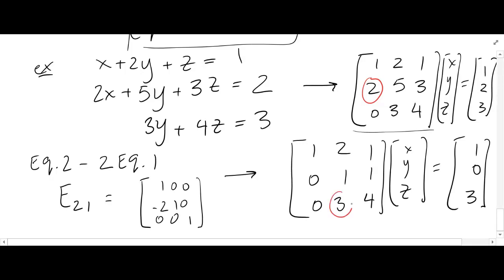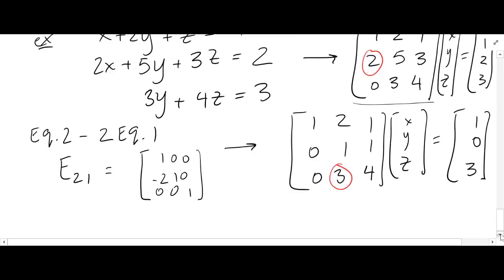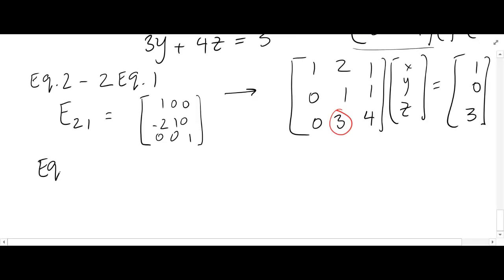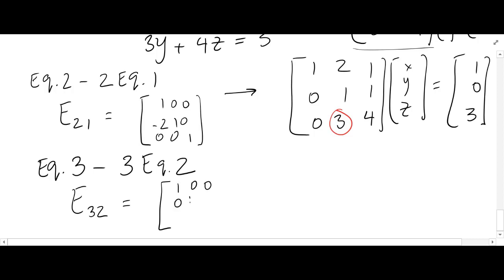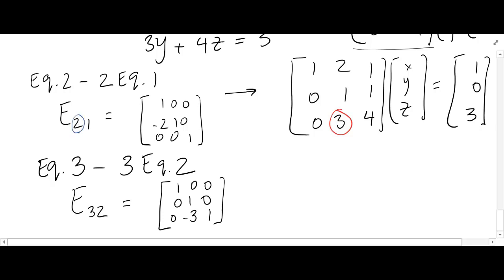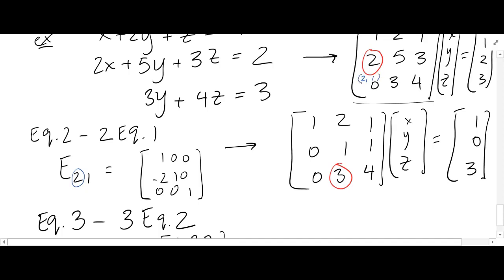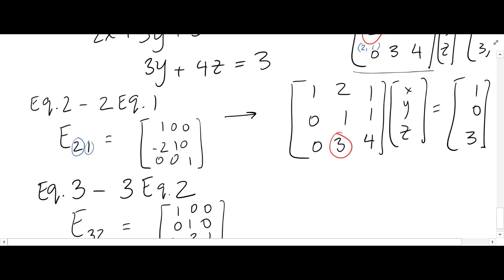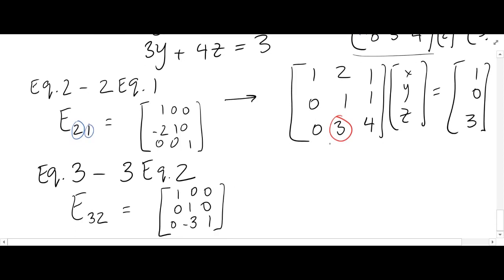Then we reduce the next entry to zero by doing equation 3 minus 3 times equation 2, which is represented by matrix E₃₂. I'm labeling these by the entry being changed: E₂₁ means I'm changing the row 2, column 1 entry; E₃₂ means I'm changing the row 3, column 2 entry. After doing that operation, we get an upper triangular matrix, with 1 in that position and 3 minus 3 times 0 equals 3.